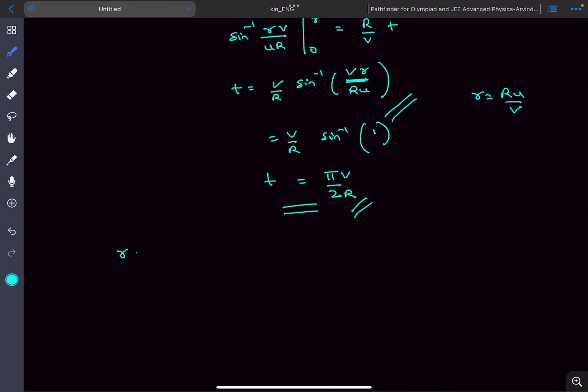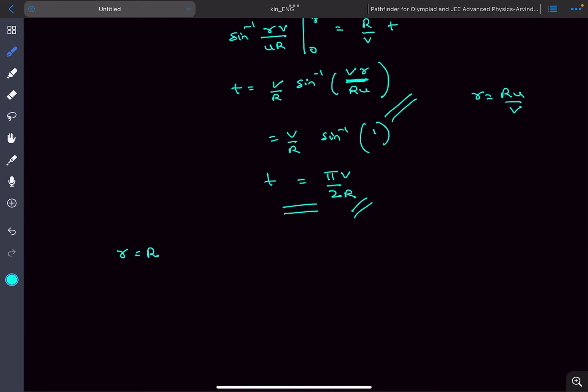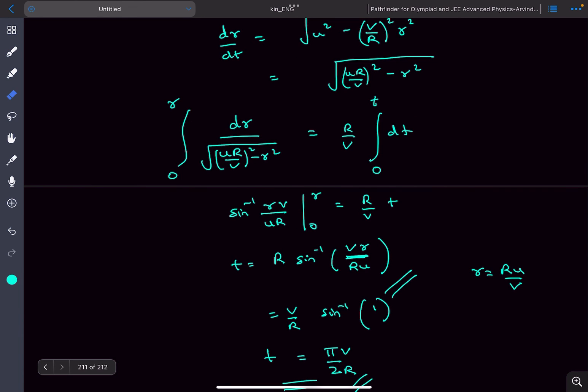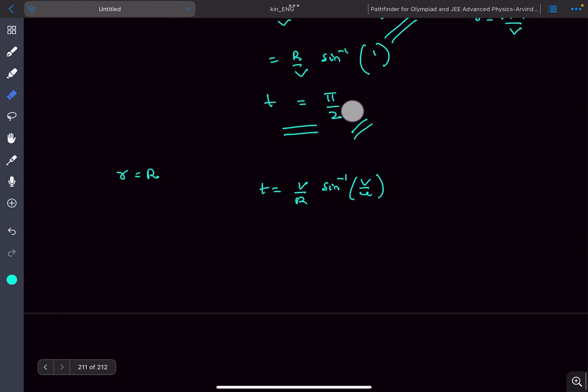So now in option (b), we had to find the time in which particle P catches Q, which means we have to set r to be the radius of the circle. Oh actually, I made a mistake here. This would be R by v. This would be R. This here would be v by R. So this value of time would be πR divided by 2v.